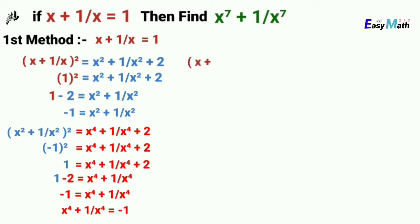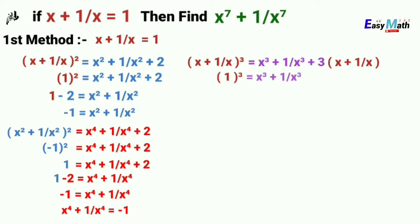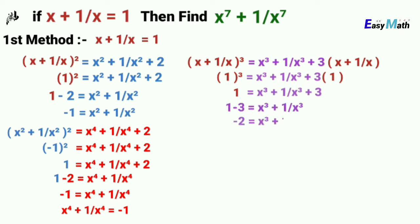As we know that the cube of x plus 1 over x equals x cubed plus 1 over x cubed plus 3 times x plus 1 over x. Using x plus 1 over x equal to 1 on both sides, after these three simple steps, the value of x cubed plus 1 over x cubed equals minus 2.